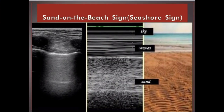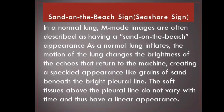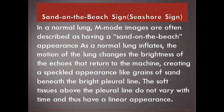Sand on the beach sign — seashore sign in a normal lung. M-mode images are often described as having a sand on the beach appearance as a normal lung inflates. The motion of the lung changes the brightness of the echoes that return to the machine, creating a speckled appearance like grains of sand beneath the bright pleural line. The soft tissues above the pleural line do not vary with time and thus have a linear appearance.